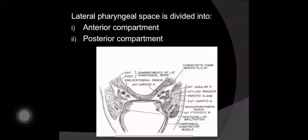The lateral pharyngeal space is divided into two parts: the anterior component and the posterior component. This is the anterior component and this is the posterior component. The stylohyoid process divides it into these two compartments.